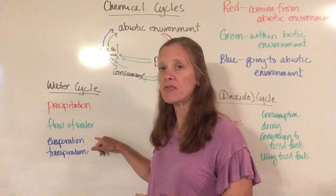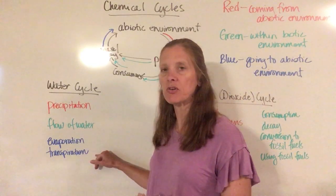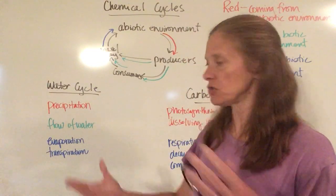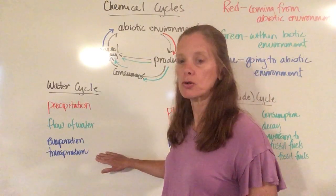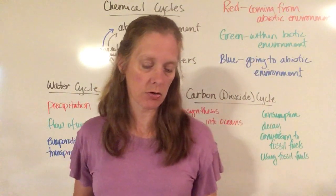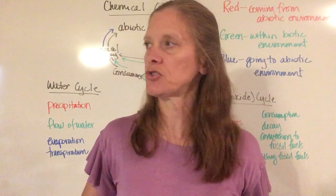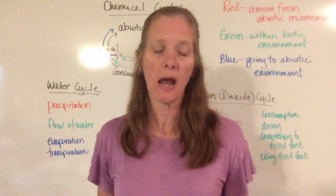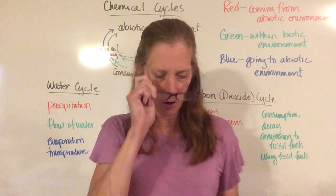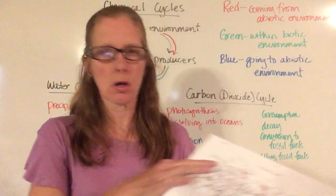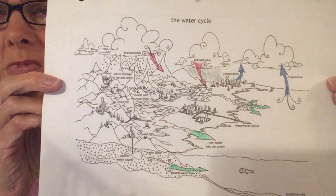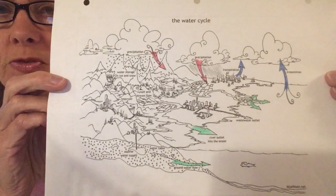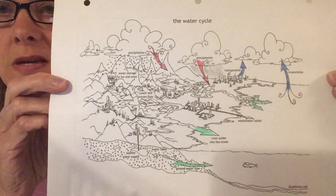Transpiration includes evaporation in it, but transpiration specifically happens with plants. All of your water vapor goes back into the air either through evaporation or transpiration. You should see two arrows on your diagram — one for evaporation from standing or flowing water and the ocean, and one for transpiration. Your finished diagram with all arrows colored in should show two red arrows for precipitation, green arrows for stream flow, and blue arrows for transpiration and evaporation.